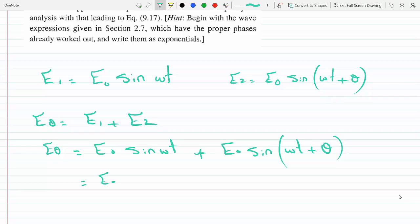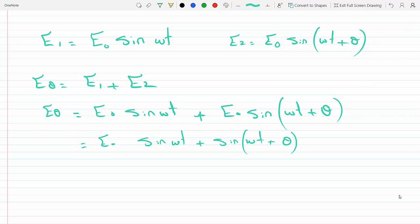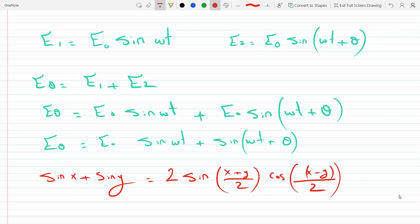If you pull out an E0 then you get sine omega t plus sine omega t plus theta. There's a trig identity that you can change sum to product. You could change sum to product. It says sine x plus sine y is equal to two sine their sum over two, x plus y over two, cosine their difference over two.